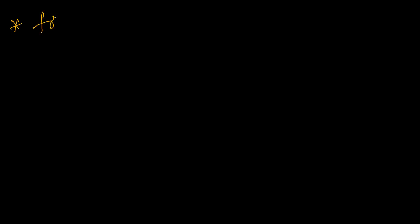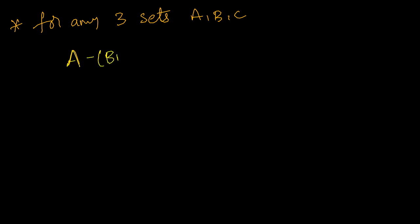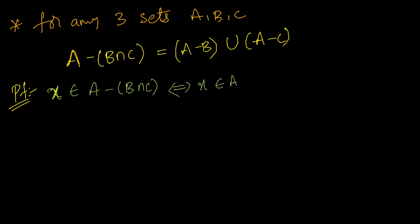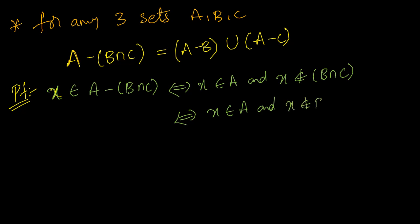Now let us see the fourth and final De Morgan's law. For any three sets A, B, C: A minus (B intersection C) = (A minus B) union (A minus C). For proving this, let x belong to A minus (B intersection C). The meaning is: x is in set A but not in B intersection C. So x belongs to A and x does not belong to B intersection C.